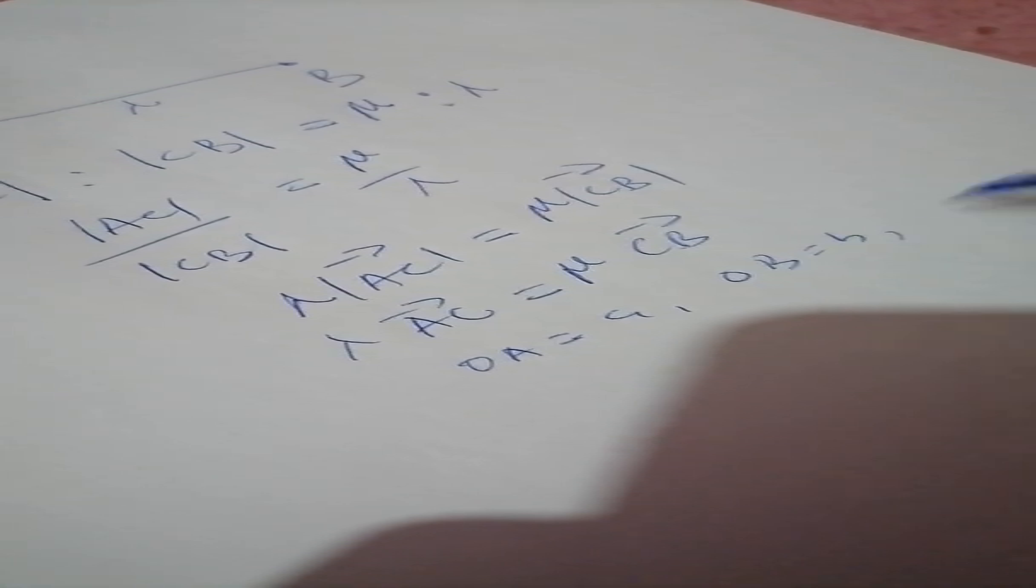So, if I'm using position vectors, position vectors where OA is A, OB is B, and OC is C, it means that my AC vector is just OC minus OA, which is C minus A, and my CB is just B minus C.